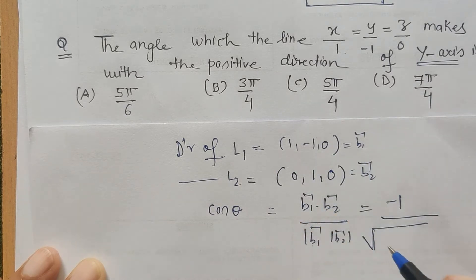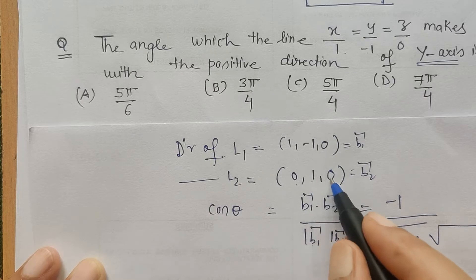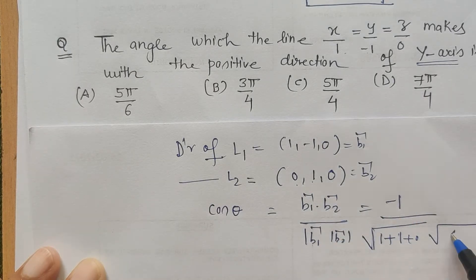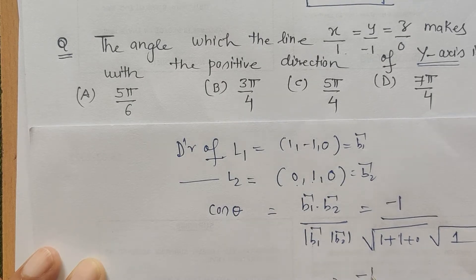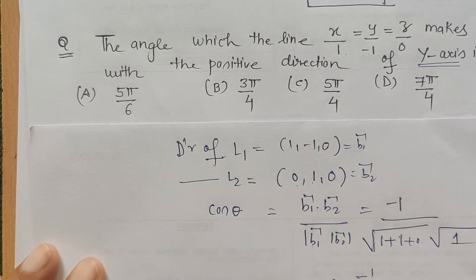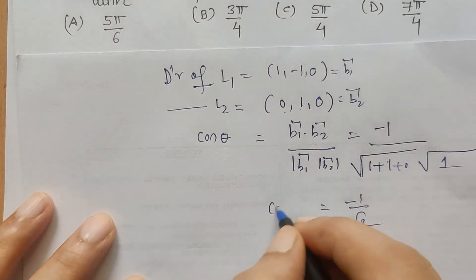So it is 1 plus minus 1 squared is again 1 and 0. Similarly, 0 squared plus 1 squared plus 0 squared, so only 1 is left here, the remaining terms are 0. So I'm left with minus 1 upon root 2, minus 1 upon root 2. So I just have to calculate the value of theta.